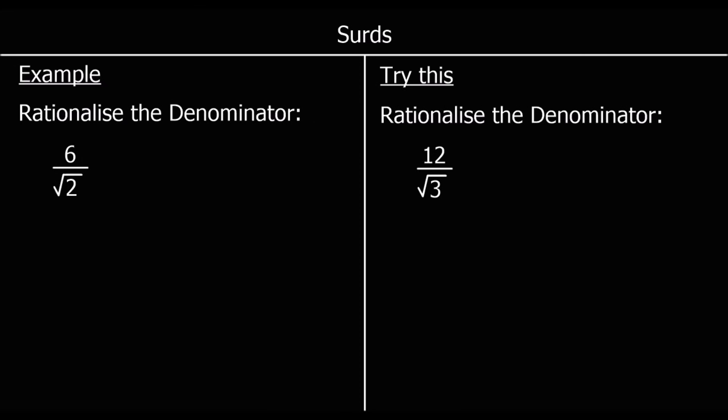This question says rationalise the denominator. The denominator is the bottom of the fraction and rationalise means make sure that it's a rational number. Surds are irrational numbers — they can't be written as fractions and if you write them as a decimal they'll go on forever without any pattern. So if a question says rationalise the denominator, we need to make sure there's no surd on the bottom of the fraction.